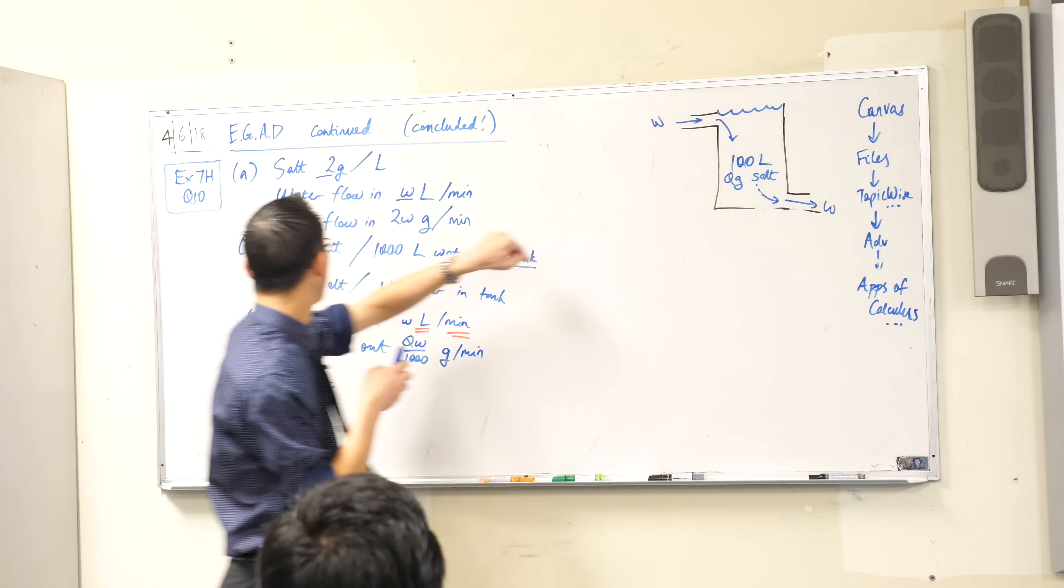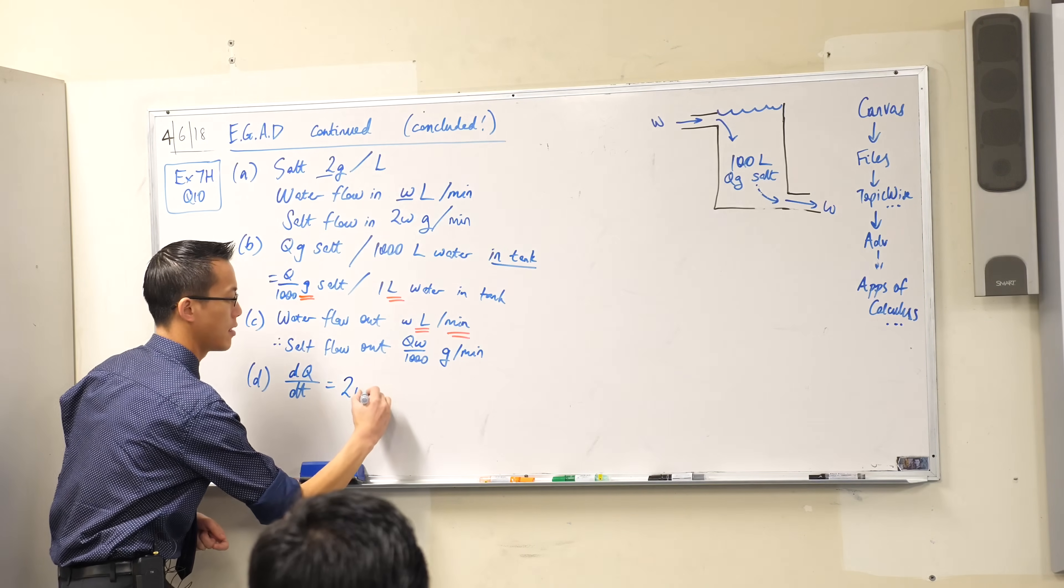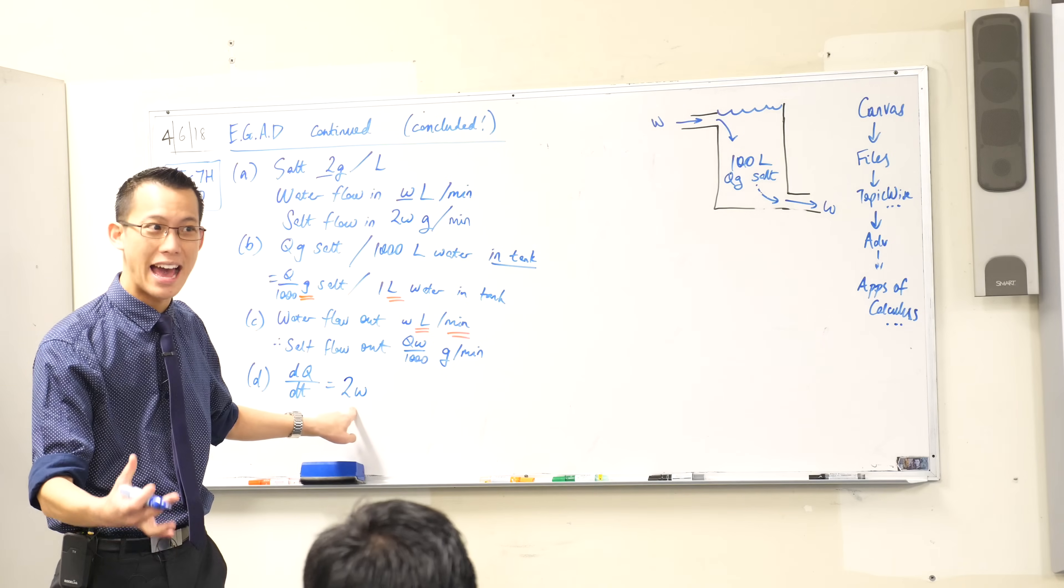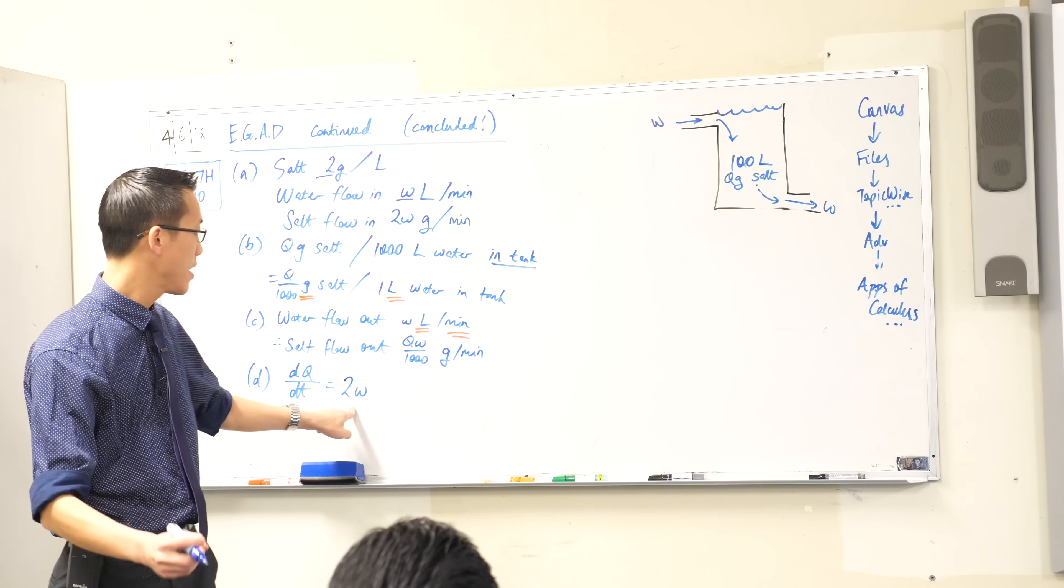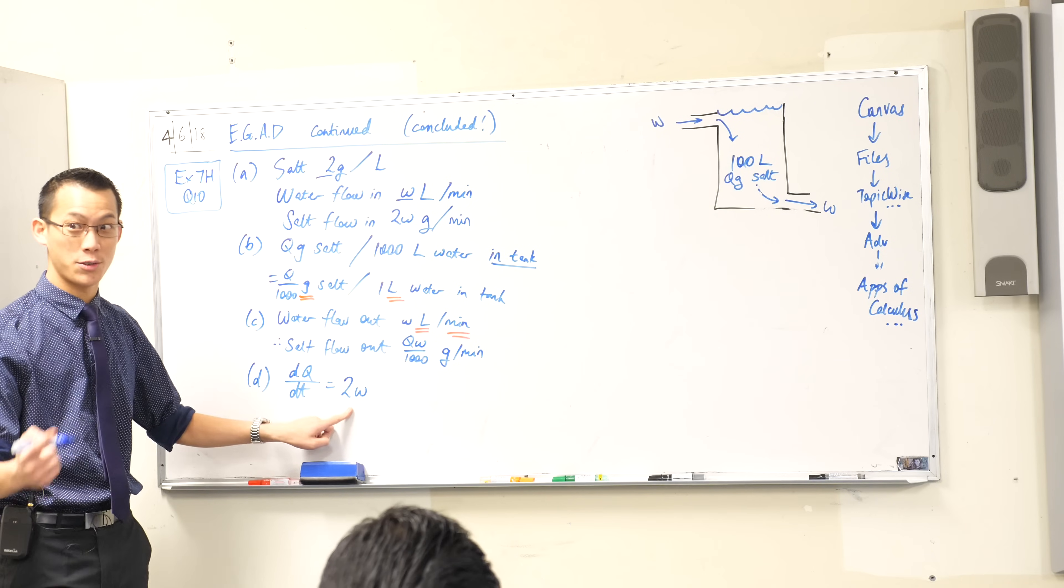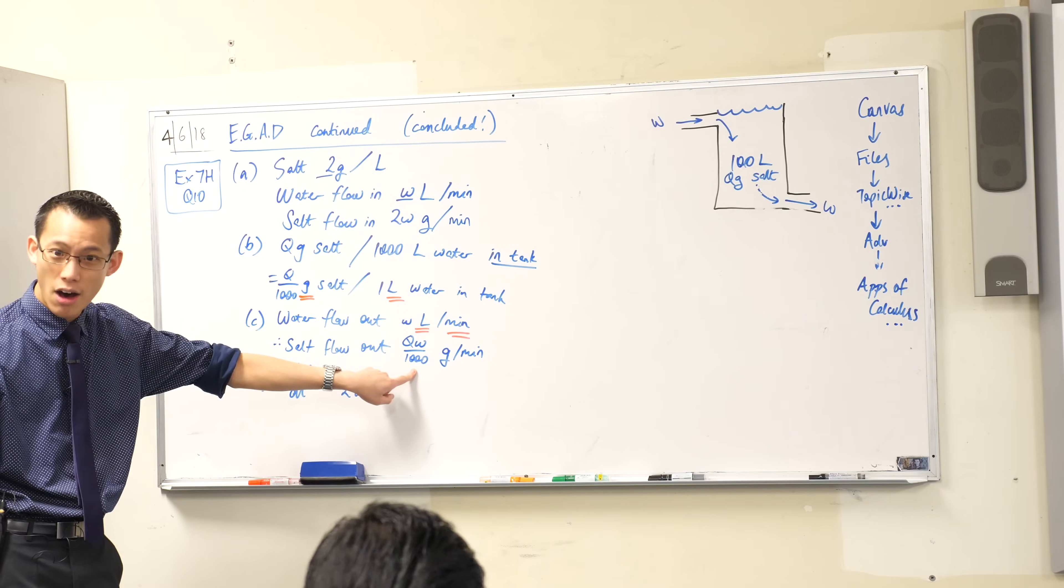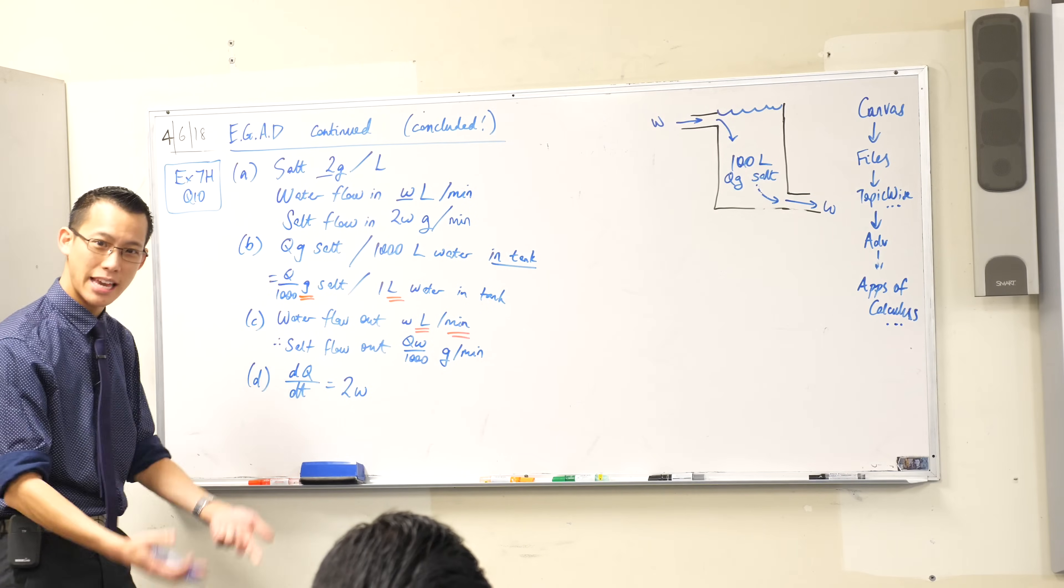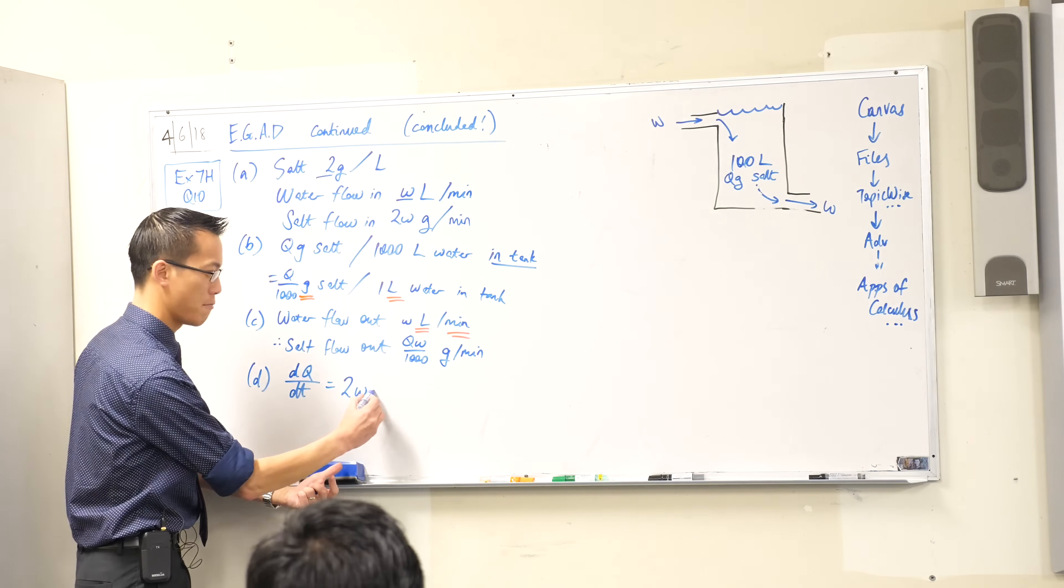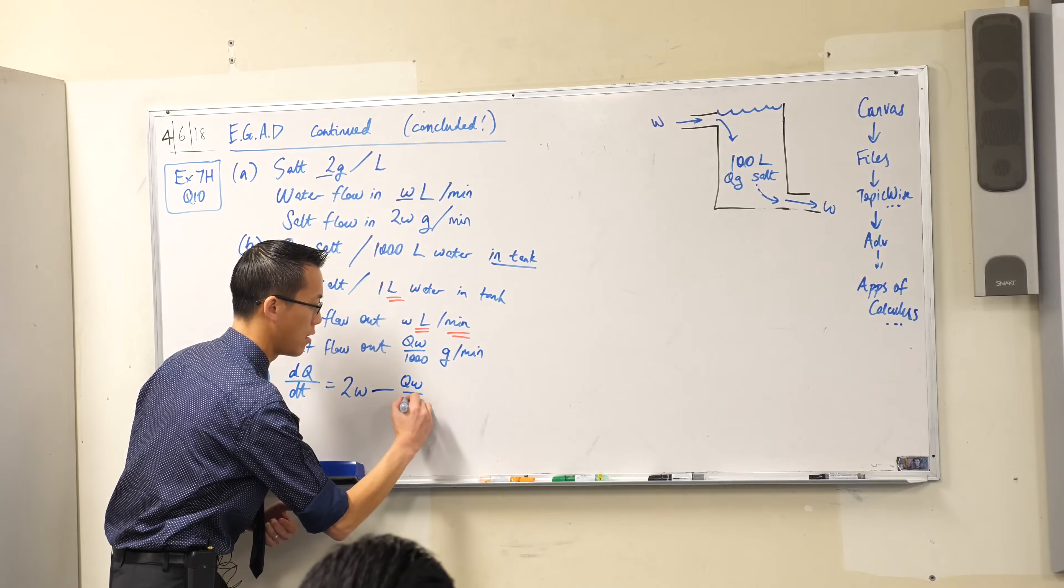What is making it go up? Salt's going in, right? That comes from here. Salt is flowing in at this rate. So I know that's making it change. That's the salt flow in, but also salt is being taken out at the same time. Do you agree? How much? Have a look at the previous question. That's why they scaffolded this for us, right? This is how much is being taken out at any given moment. Does that make sense? Since I'm taking it out, what operation should I put in here? It should be minus. That's reducing the amount of salt. Are you okay with that?